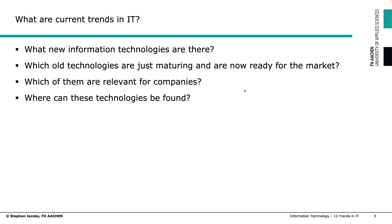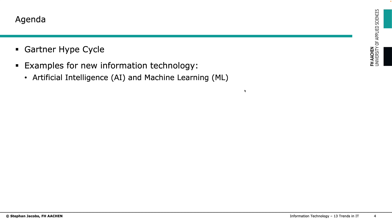There are different ways to answer these questions. So where can I find these technologies? One is for example to go to fairs or to congresses. Another one would be to read newspapers which are focusing on these issues. And one is to maybe have a look at the Gartner Hype Cycle. Gartner is a consulting company and it has published this Gartner Hype Cycle since 1995. Nowadays special Hype Cycles, for example for AI, have been developed.